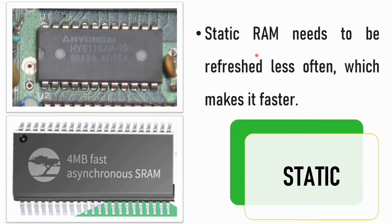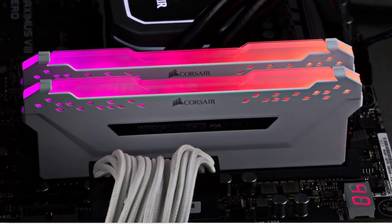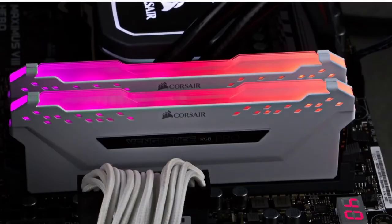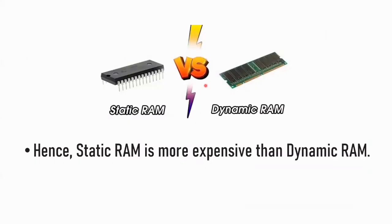Dynamic RAM is slower than static RAM because it is refreshed frequently. Static RAM is more expensive than dynamic RAM. Dynamic RAM is less expensive in terms of cost.